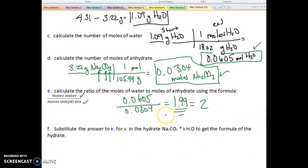now, the last part, what we're going to do is this 2 that we just calculated plugs back into the original formula. So Na2CO3·xH2O. We just found x. It's 2. 2H2O.